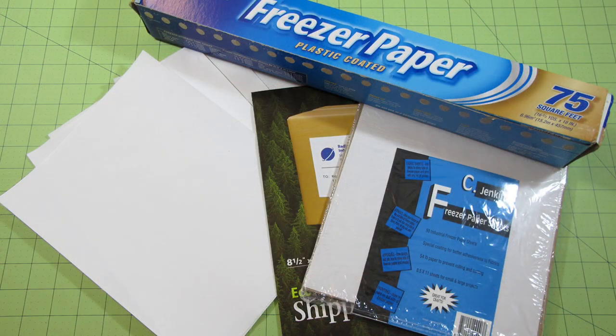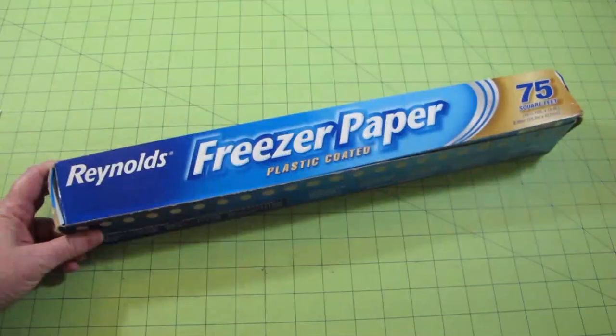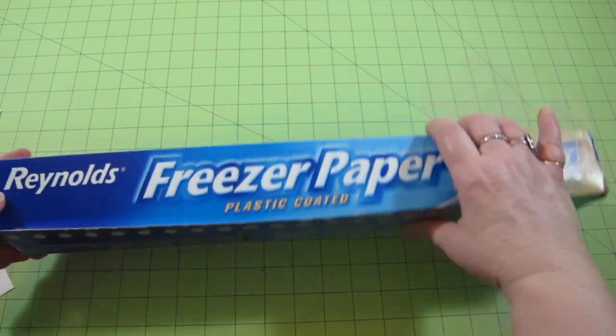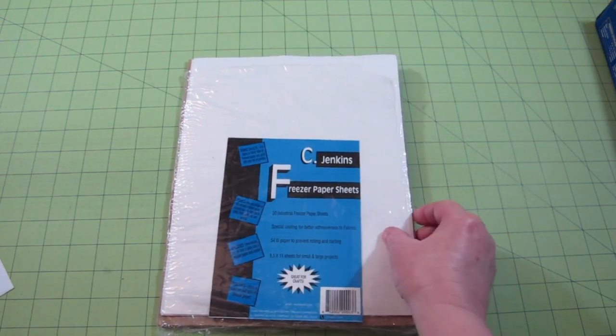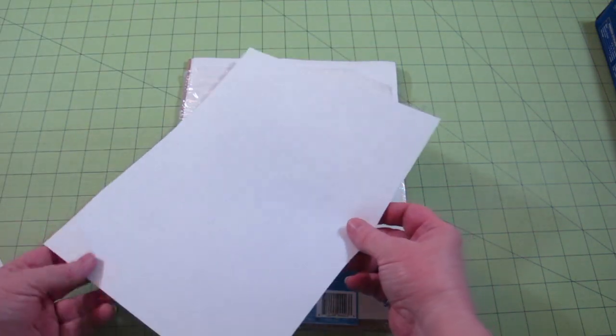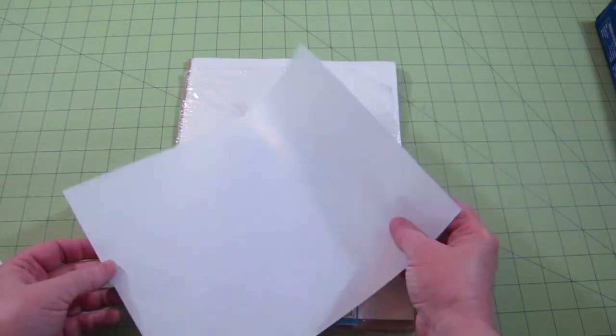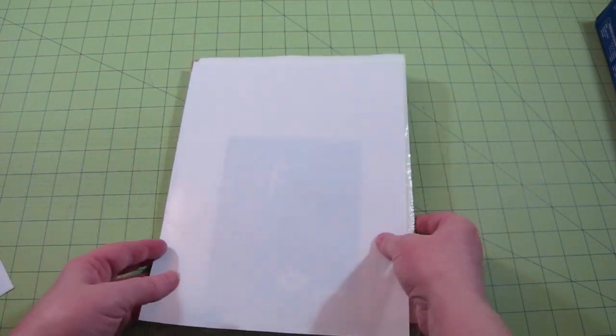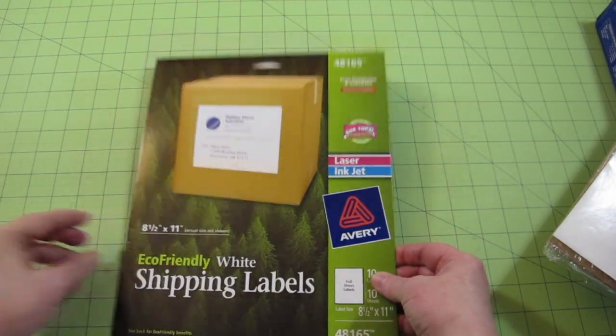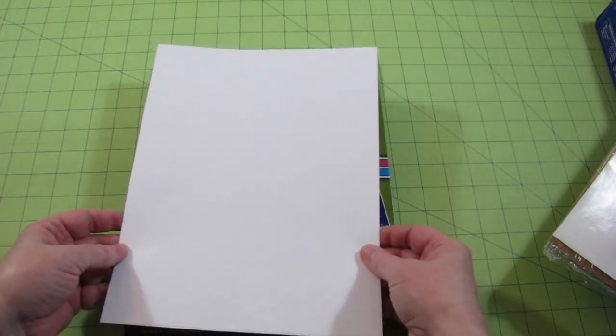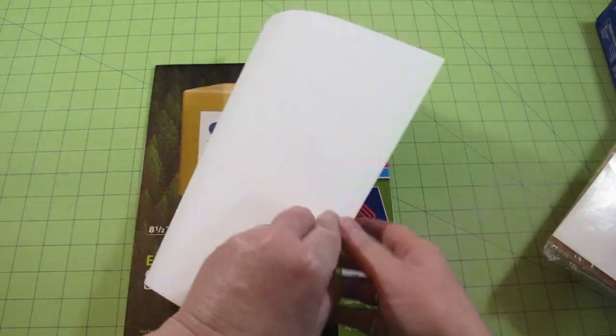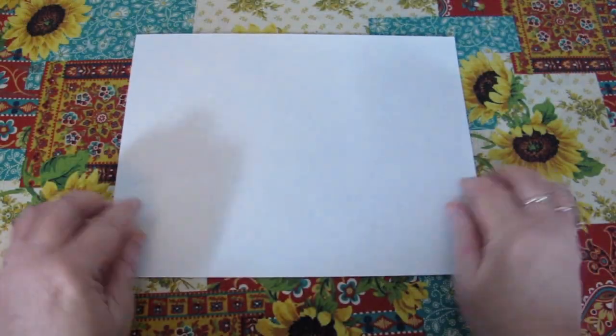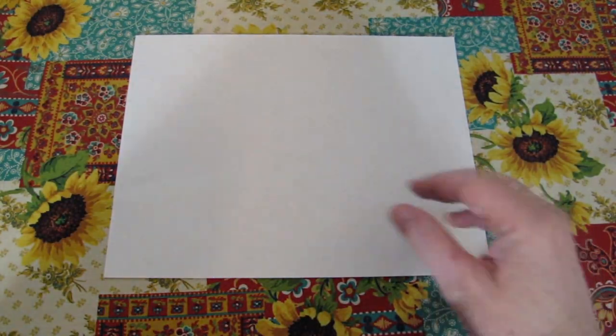The most common types of backing paper are standard freezer paper that you can find in the grocery store, you can use C. Jenkins freezer paper sheets, which are pre-cut and heavyweight. These freezer paper sheets tend to cause less paper jams. Or you can use a full size sticky label, which is my preferred method, because it ensures a very strong adhesion. You can reuse all these types of paper backings over and over again until they no longer stick.